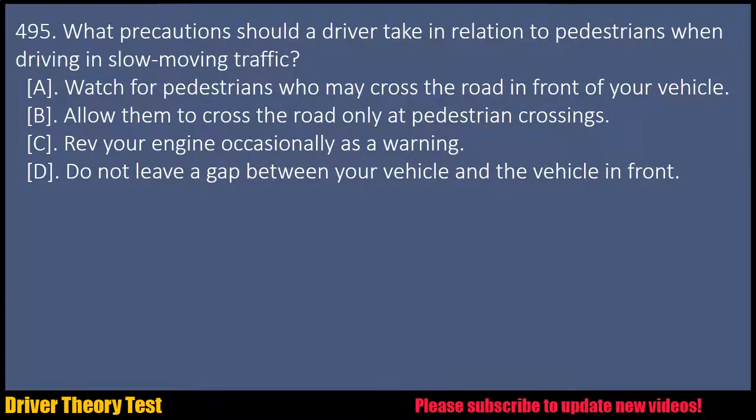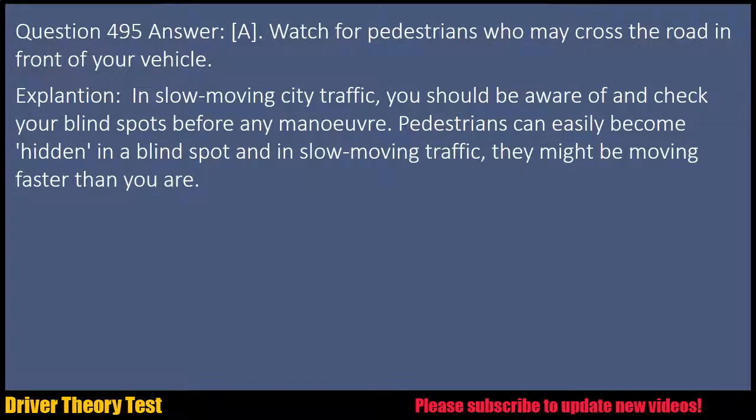Question 495: What precautions should a driver take in relation to pedestrians when driving in slow-moving traffic? A. Watch for pedestrians who may cross the road in front of your vehicle. B. Allow them to cross the road only at pedestrian crossings. C. Rev your engine occasionally as a warning. D. Do not leave a gap between your vehicle and the vehicle in front. Answer: A. Watch for pedestrians who may cross the road in front of your vehicle. Explanation: In slow-moving city traffic, you should be aware of and check your blind spots before any manoeuvre. Pedestrians can easily become hidden in a blind spot, and in slow-moving traffic, they might be moving faster than you are.